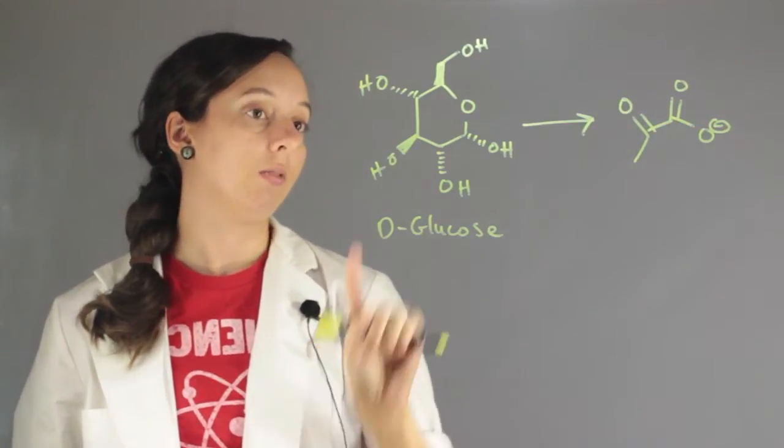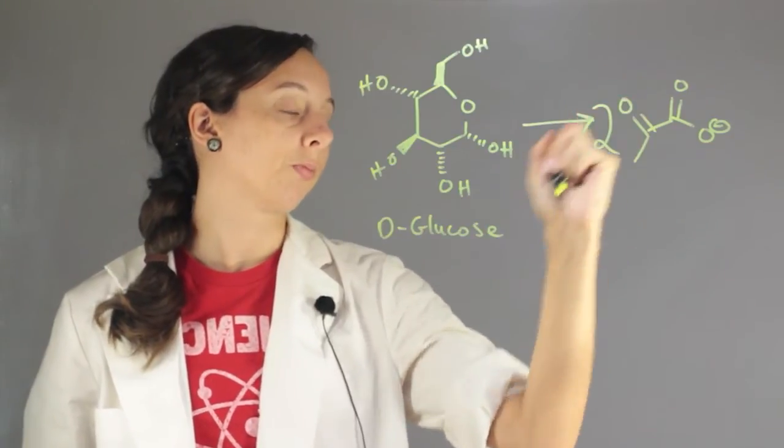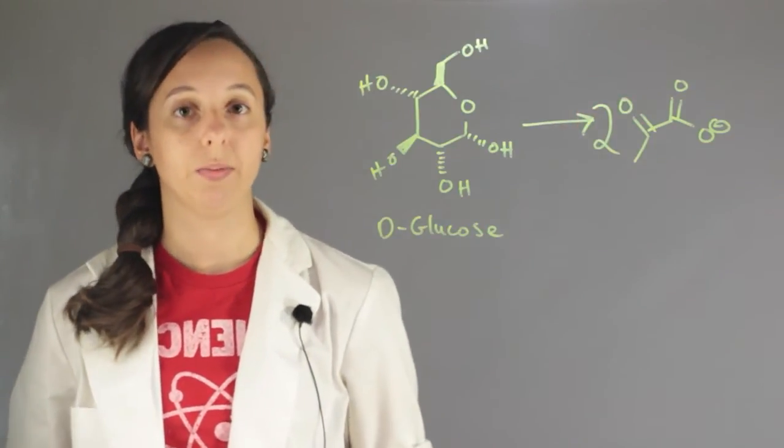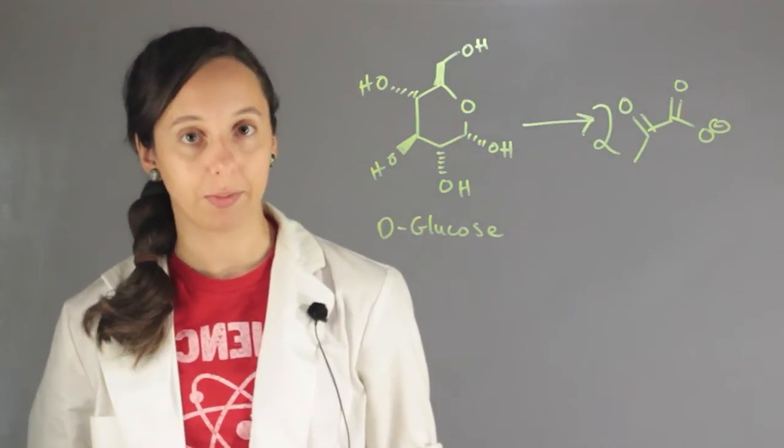And for every one glucose you break down you actually get two pyruvates. So the exact mechanism that happens is actually done in a metabolic pathway so it's very complicated. It has lots of things going on but in general we can see that